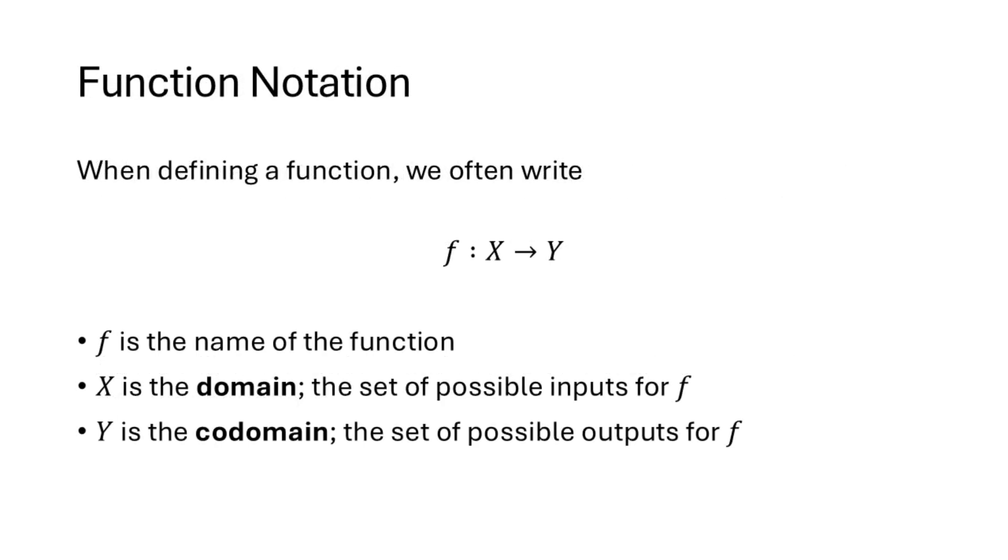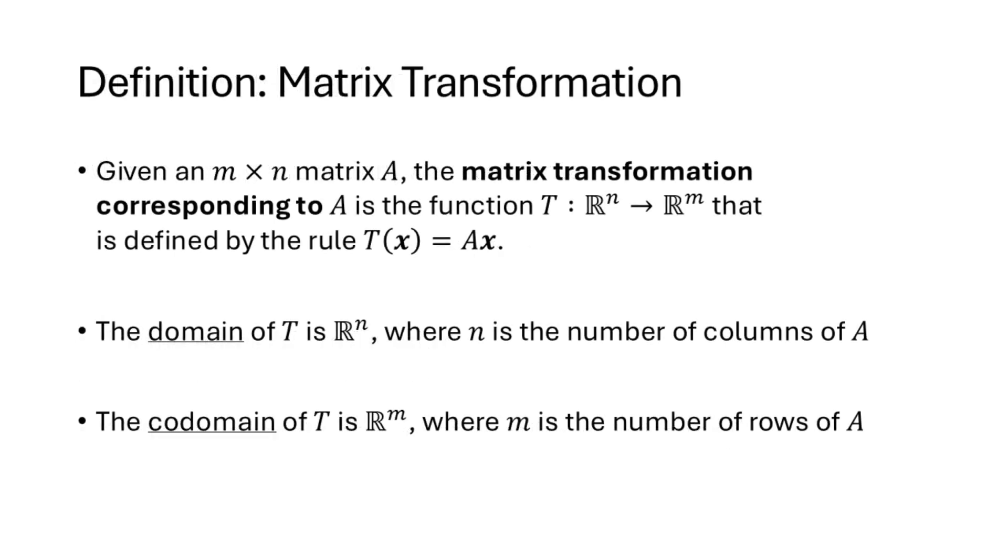We're going to be talking about functions in this lecture, so let's talk about our basic function notation. We typically write a letter that represents the name of the function, in this case F, and then a colon, and then two variables separated by an arrow. The first variable represents the domain of the function, those are the things that we can plug into the function. And the second variable represents the codomain of the function, those are the things we could possibly get out of the function. In this course, our functions are going to have domains and codomains that are sets of vectors.